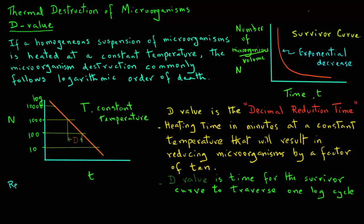D value remains the same for each of the log cycles on this curve. The reduction is by a factor of ten, as we observed before, from one thousand to one hundred.